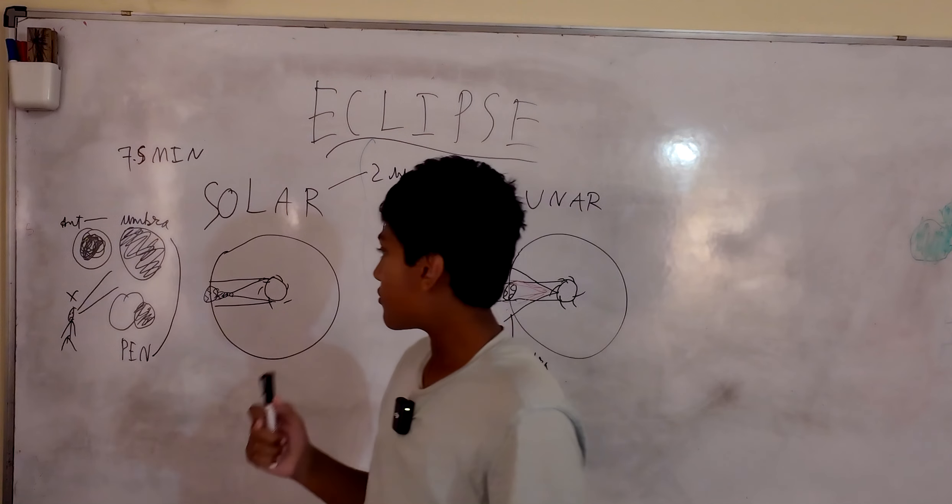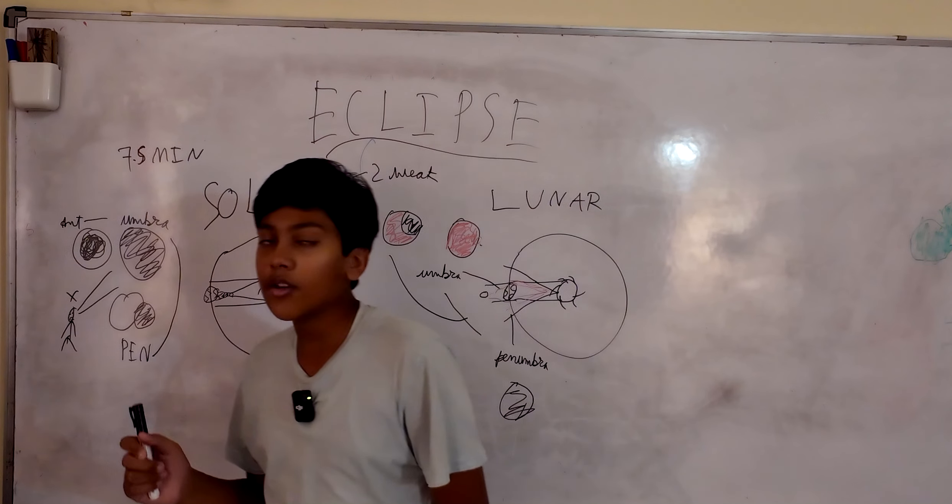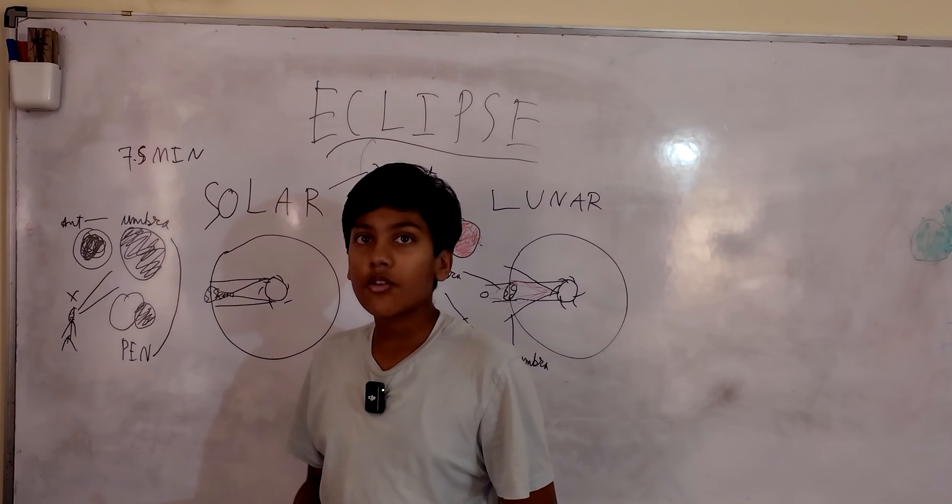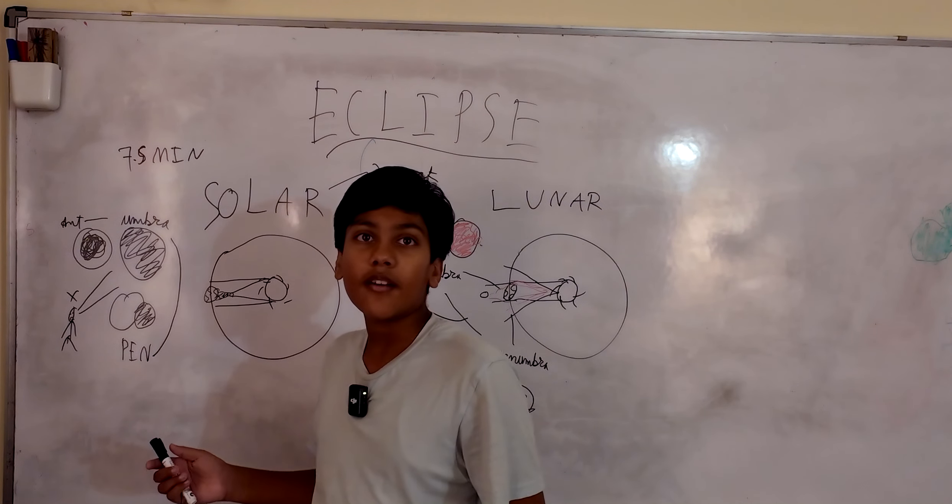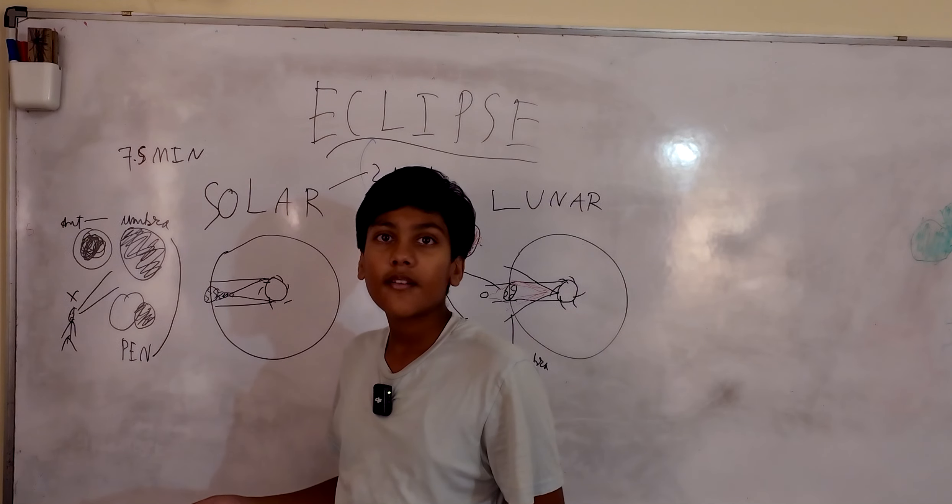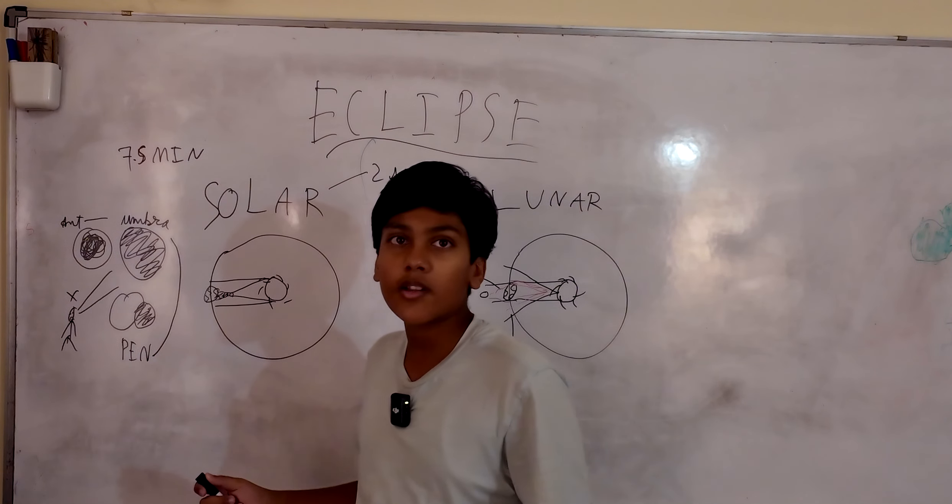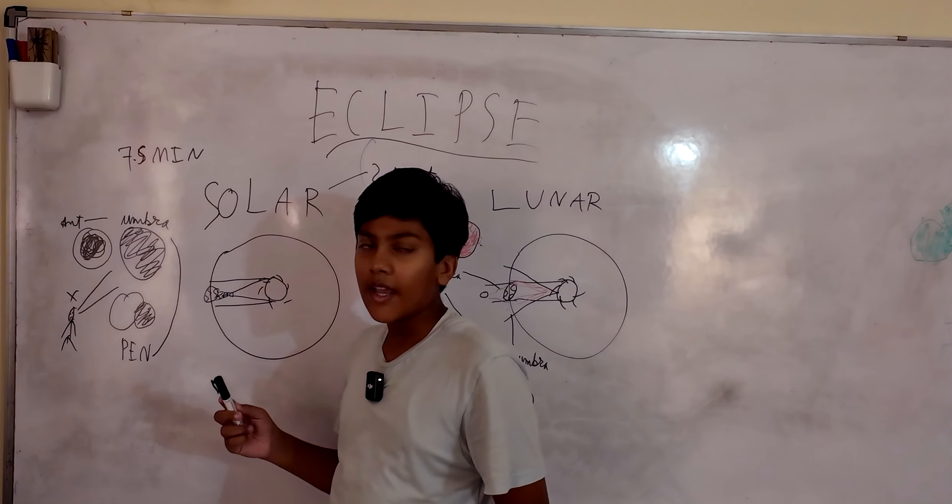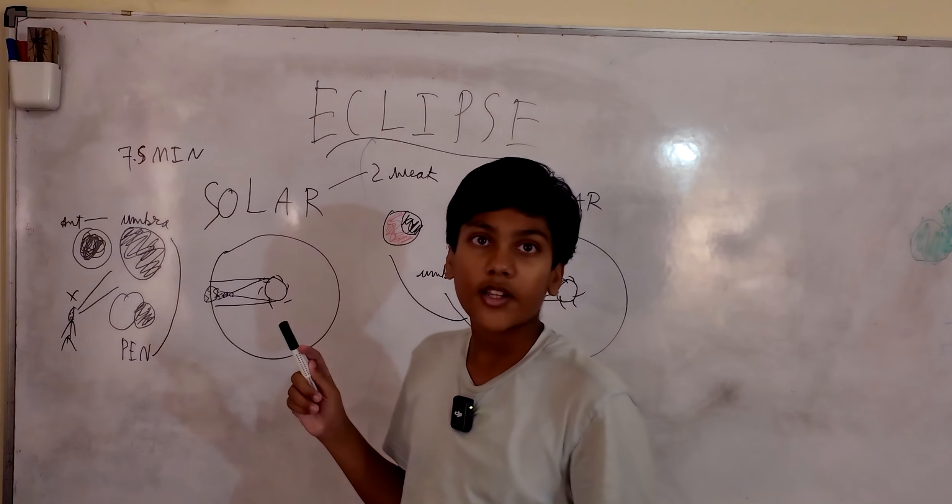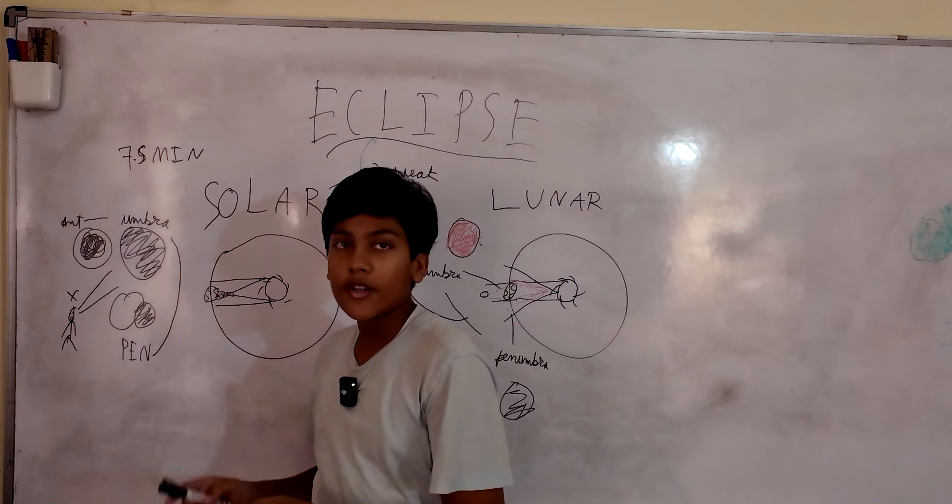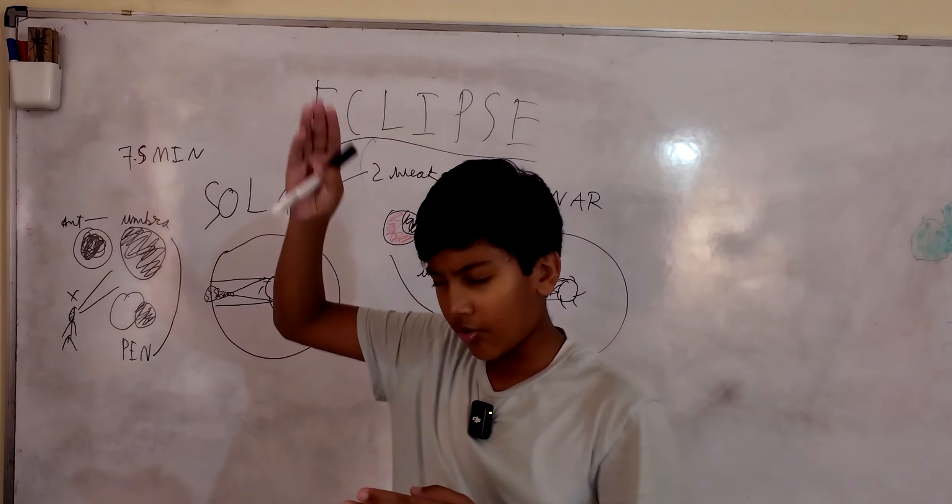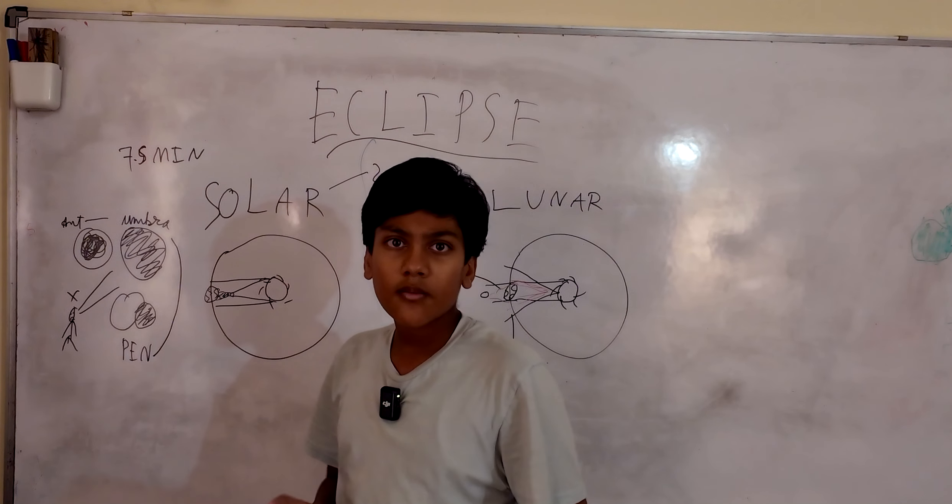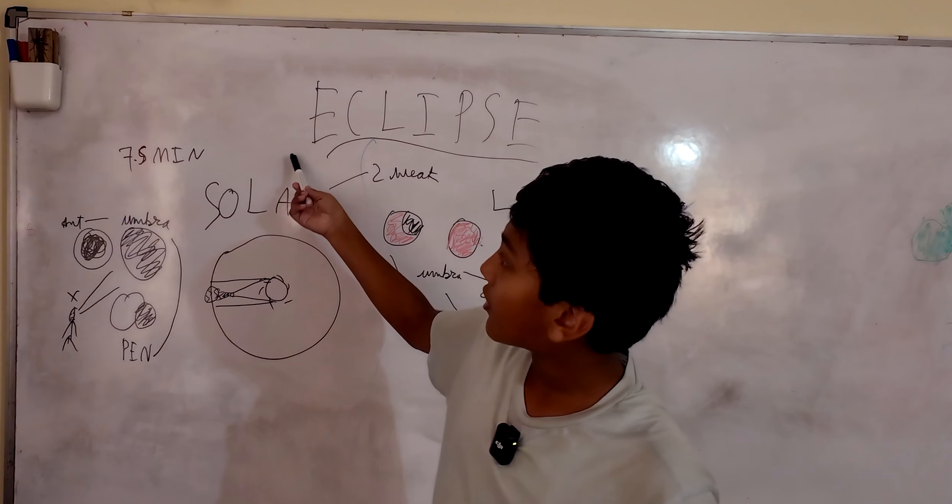A solar eclipse can also depend on your perspective because of the moon's shadow. Say it's happening in America, right? Say you're all the way in China, you can't see the solar eclipse because it's on the other side. And say you were nearby like Canada, you can see some of the solar eclipse. But in USA, you would see the full total umbra solar eclipse.